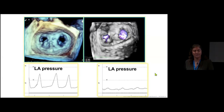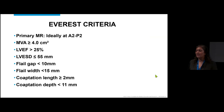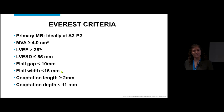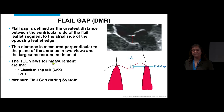It's important to recognize what TEE looks for to determine the success of MitraClip. The EVEREST criteria specified: regurgitation ideally at the middle scallop A2P2, mitral valve area greater than 4 cm², EF greater than 25%, LV end-systolic diameter not bigger than 55 mm, flail gap less than 10 mm, flail width less than 15 mm, coaptation length greater than or equal to 2 mm, and coaptation depth less than 11 mm.